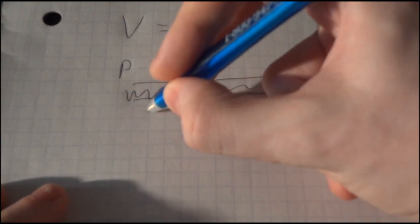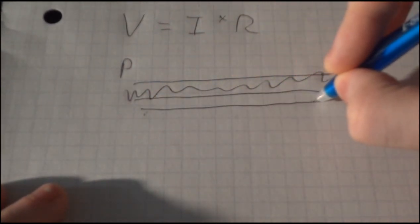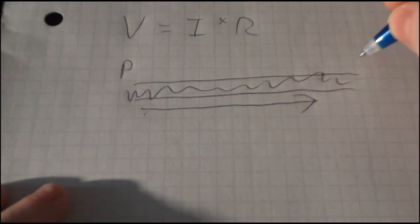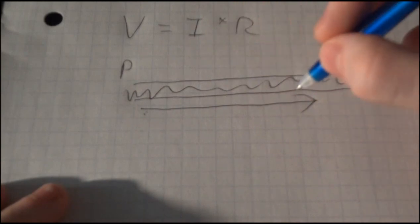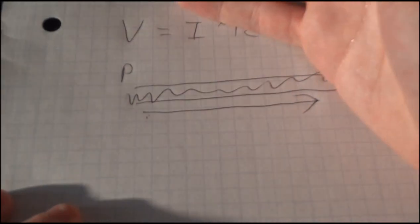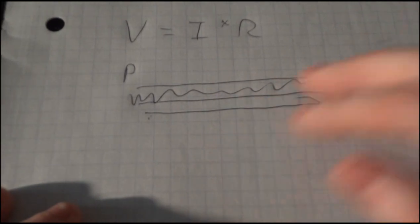Now when we look at something like current, well we're looking at the water flow, the actual movement of the water through the hose. We would consider that to be the current. So the water pressure, the force that pushes the water through, we can consider the voltage. The actual flow or the movement of the water we can call the current.